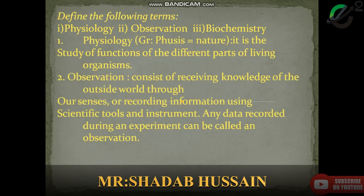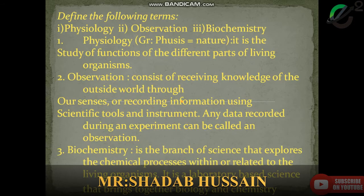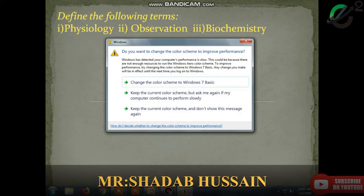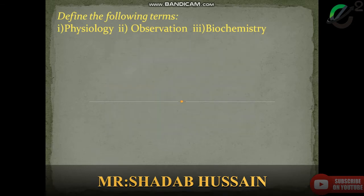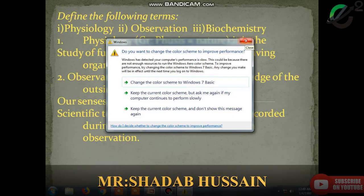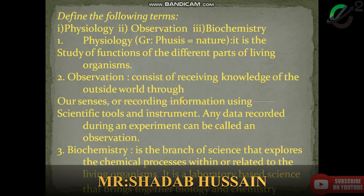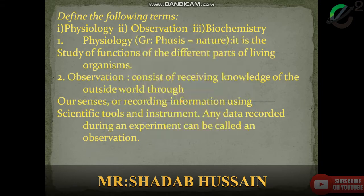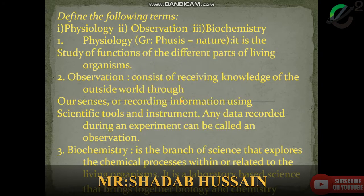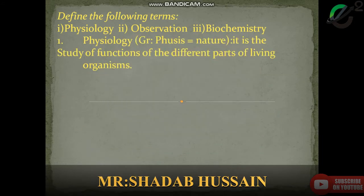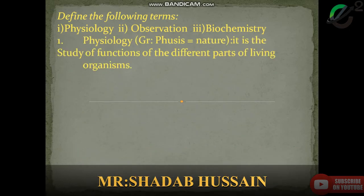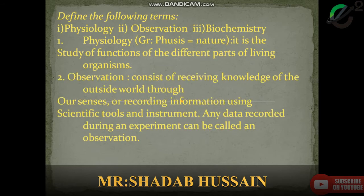We are starting the copy work today. On page number 23, there are six short terms given. From those six terms, we are going to explain three of them: number one is physiology, number two is observation, and number three is biochemistry. Are you ready, dear students? When you are getting this through WhatsApp or an online channel, try to watch the video very carefully from start to end.